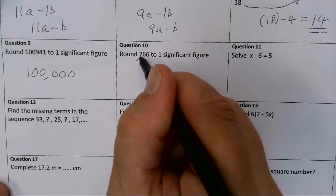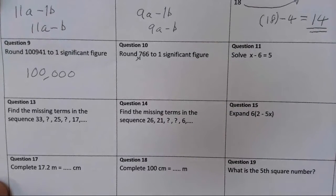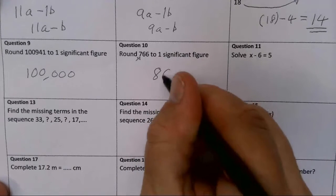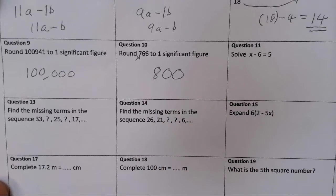With this one, that is the most important column. It's the 100s column, so I need to see what 100 is it closest to. Is it closest to 700 or 800? And it's closer to 800 than it is to 700, so my answer is 800.